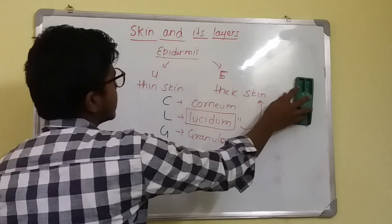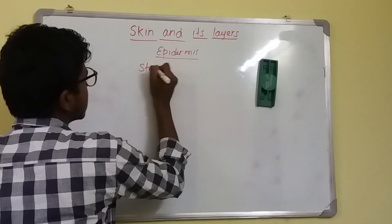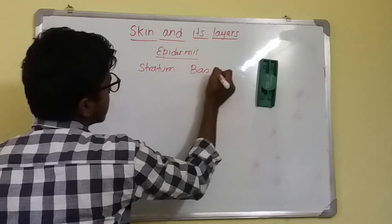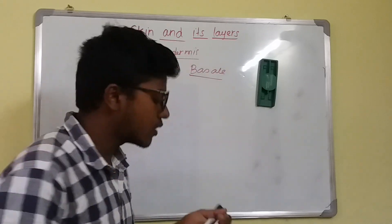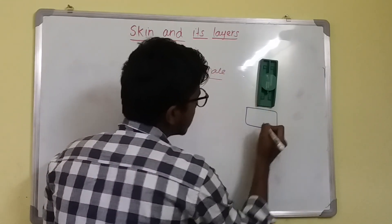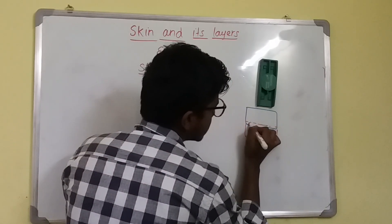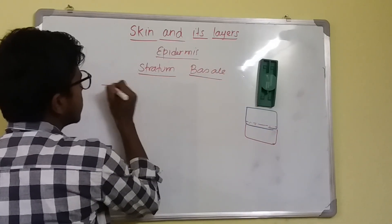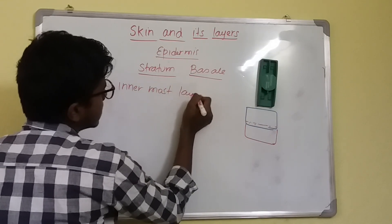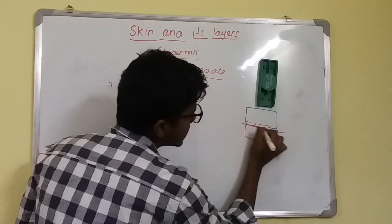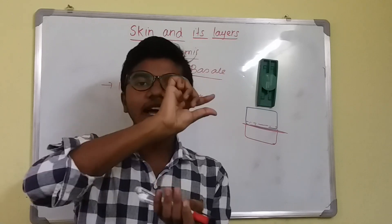First, we deal with the Stratum Basale. As the name suggests, it is the innermost layer of the epidermis, in contact with the basement membrane. All epidermal cells lie on a basement membrane, which here is not regular but irregular, because it is indented by dermal papillae. Stratum Basale consists of a single layer of cuboidal or columnar cells.